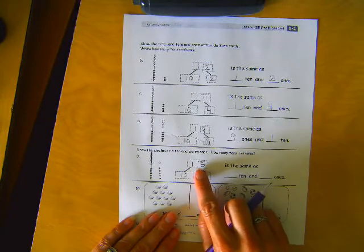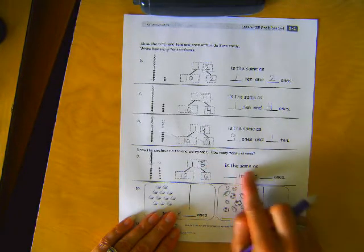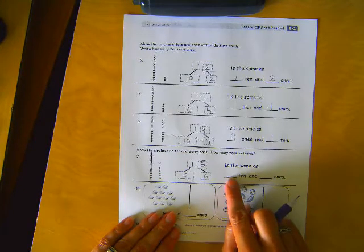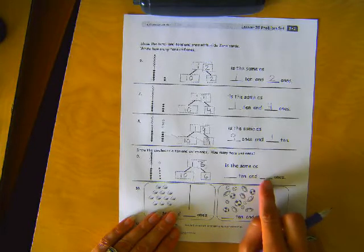So now it should be sixteen is the same as blank ten and blank ones. Go ahead and tell me how many groups of ten and how many extra ones we have.